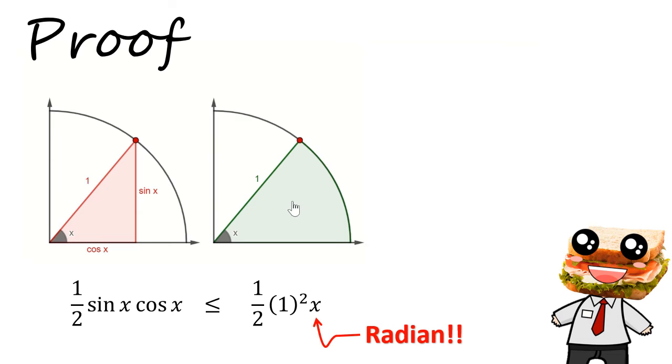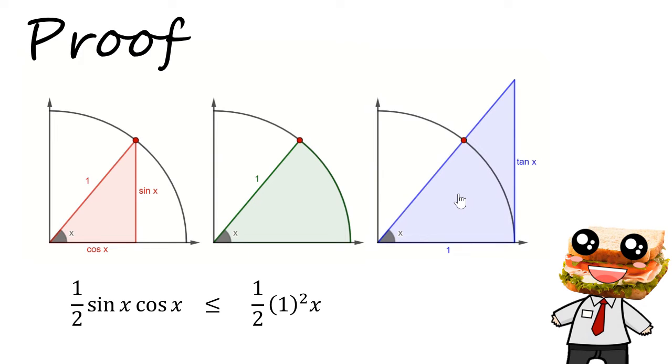When we extend this red triangle, we can also get the area of this blue triangle which is a similar triangle. And this blue similar triangle has an area that's larger than the green circular sector. So this blue triangle has a height of tangent x and a base of 1. So its area is going to be given by half tangent x. Simply put, this green area is sandwiched by a lower bound of this red triangular area and an upper bound of this blue triangular area.